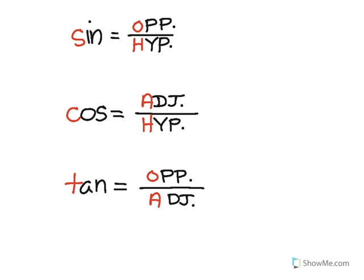There's a cute little acronym that you can use to help you memorize these when you're first learning the three basic trig ratios. First is sine — the S in sine is opposite over hypotenuse: S-O-H.